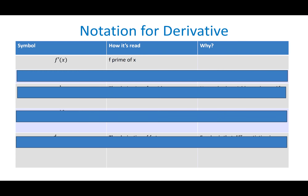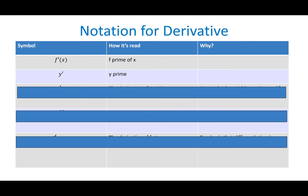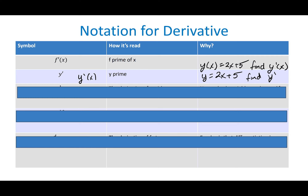Some notation for the derivative. A lot of this class is understanding the notation, the symbols they use, the questions they're asking, the type of answer they want. We've already talked about this: if you see F apostrophe X, it means F prime of X — that is the derivative. But then you might also see Y prime. So for example, Y equals 2X plus 5, and we're asked to find Y prime. Whenever you see that prime — that apostrophe on anything — they're always talking derivative.